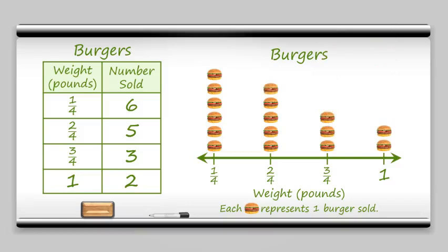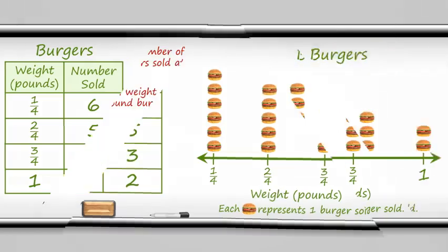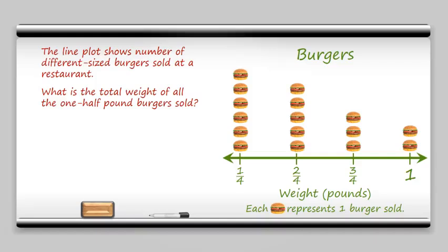So now all of our burgers are accounted for. Let's try an example. Here, we're given the different burgers sold. And we want to know the total weight of all the 1 1/2 pound burgers.